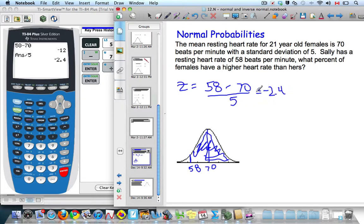So that means that Sally's heart rate is 2.4 standard deviations away from the mean.